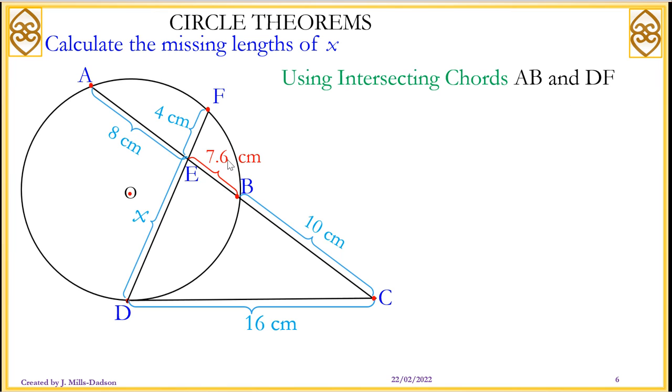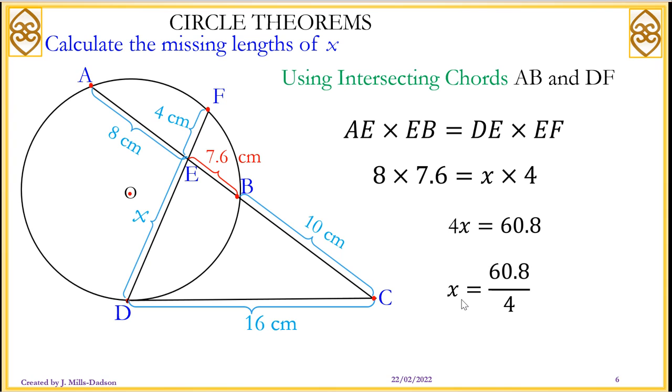Now having known this to be 7.6, we can now know the full length of the secant AC, or we can also know the full length of the chord AB. We can now use chord relationship to work out X. The chord relationship is product of each section should equal to product of the other section. So we have AE times EB should equal DE times EF. Substitute the values, 8 times 7.6 should equal to X times 4. Solve it as a normal equation. So you have 4X equals 60.8, divide both by 4, and that gives you X is equal to 15.2 centimeters.